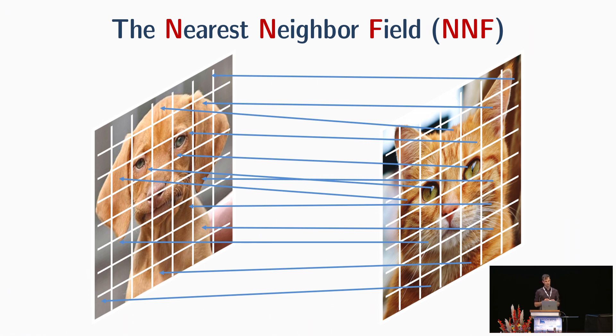This yields the nearest neighbor field of matches. Note that we match the pixels in a high-dimensional deep space. The question is how to use this nearest neighbor field in order to measure the similarity between the images.